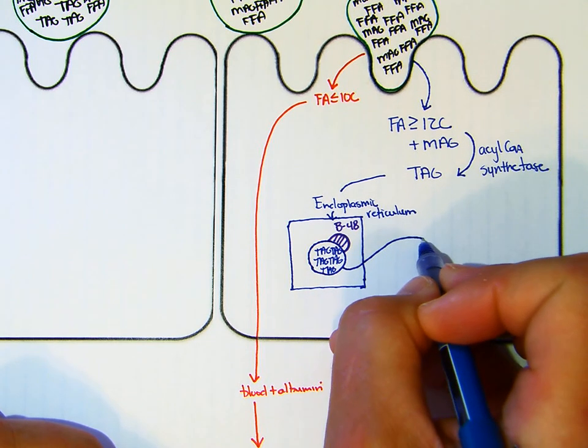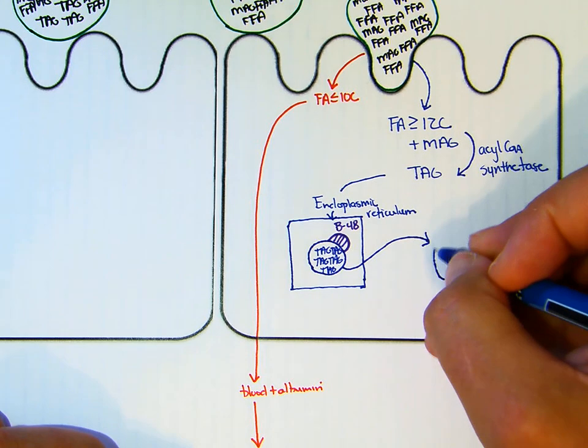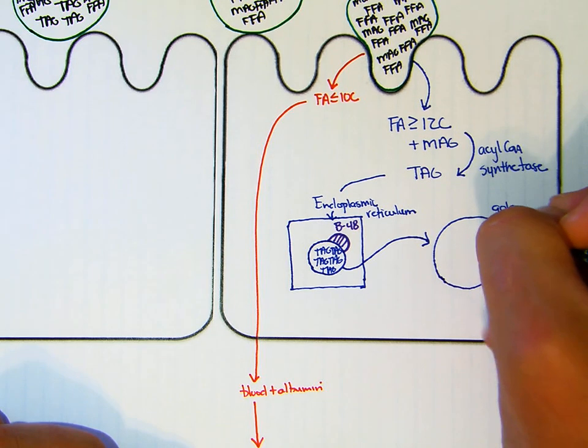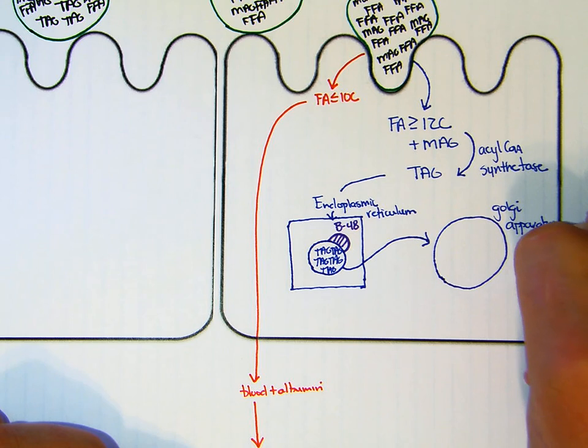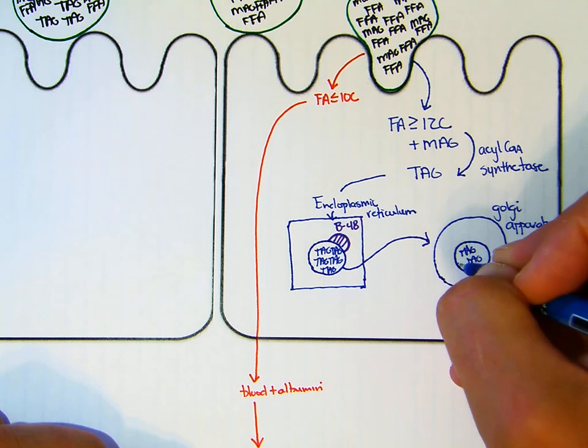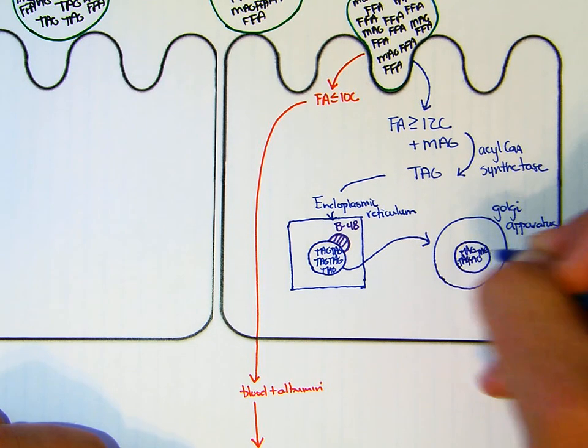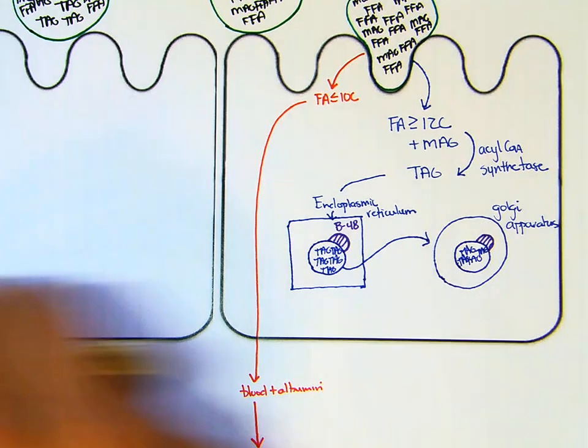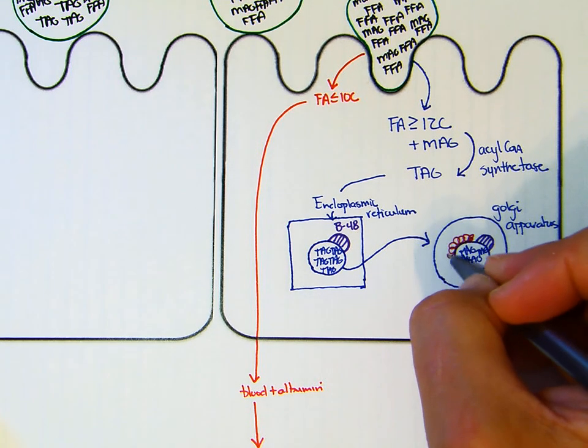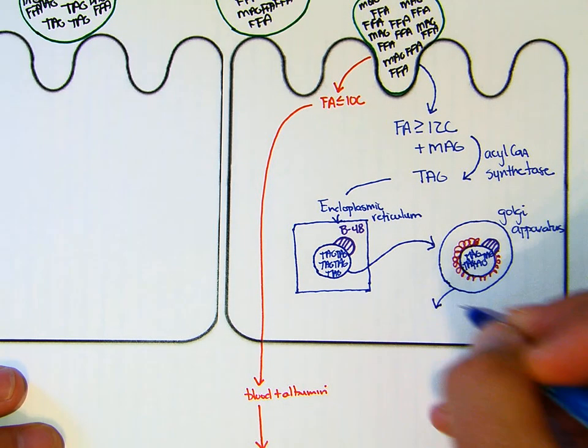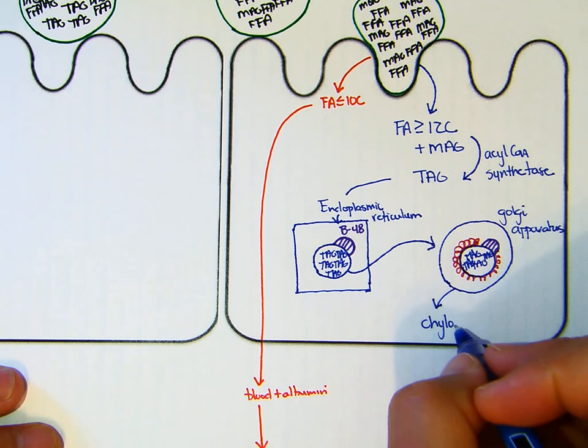From there, we're going to go to the Golgi apparatus. In there, we still have the same deal, full of TAG. We'll stick our B48 on there. In addition to the B48, we're going to put some carbohydrate around it, but it's still predominantly TAG on a weight basis. This is released from the Golgi apparatus and is now known as a chylomicron.